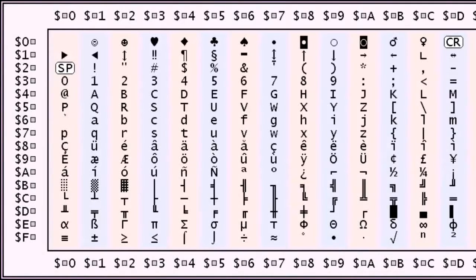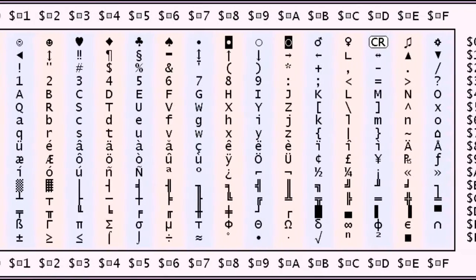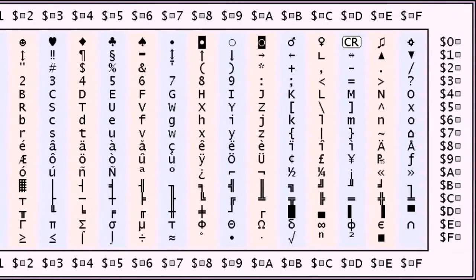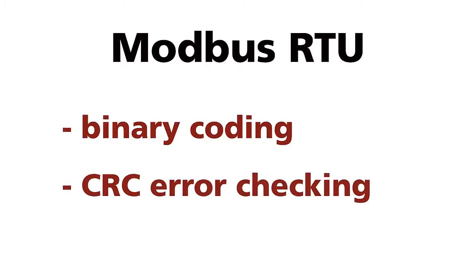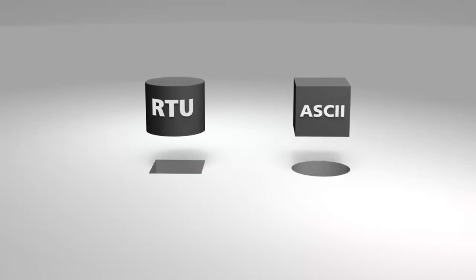Modbus was originally developed using ASCII characters to encode messages and this version of the protocol is still in use today. Modbus RTU is by far the most common implementation using binary coding and CRC error checking. The two modes are incompatible, so a device configured for ASCII mode cannot communicate with one using RTU.